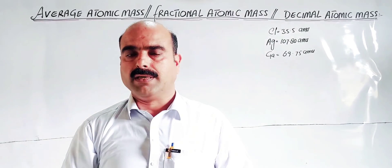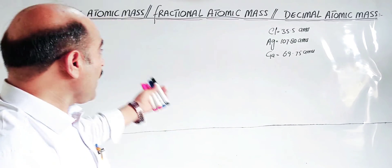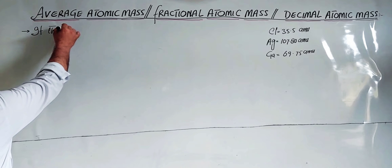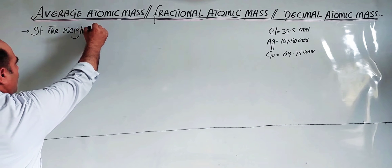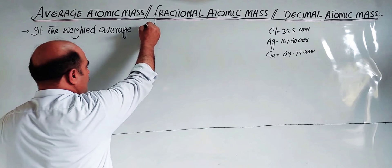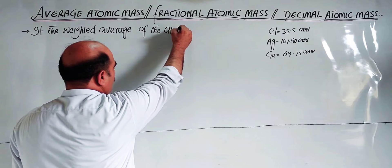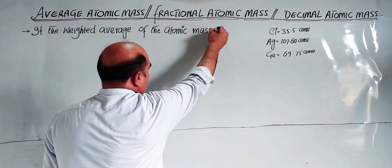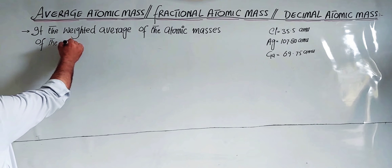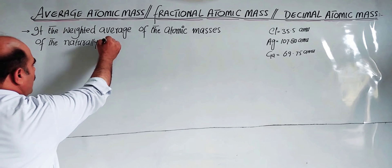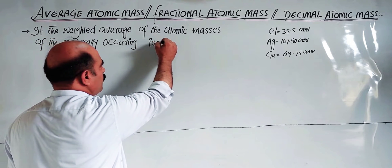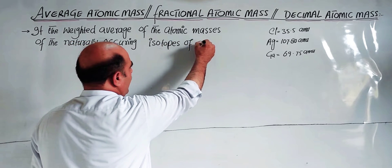So first, let's look at the definition of average atomic mass. Average atomic mass — it is the weighted average of the atomic masses of the naturally occurring isotopes of an element.